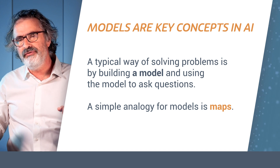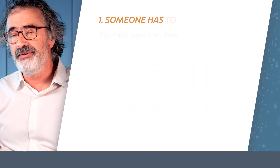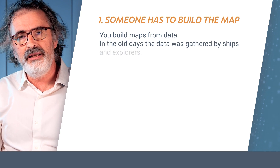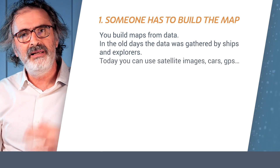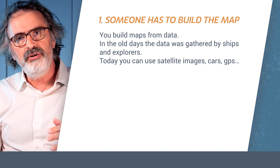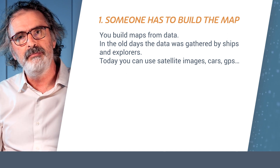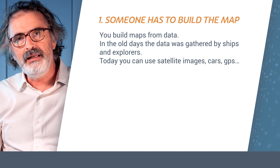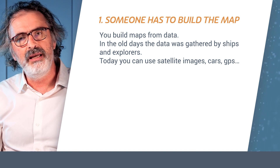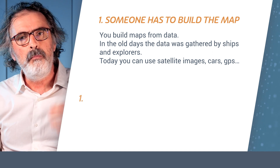A simple analogy for models is maps. When we consider maps, the first question is where do they come from? Historically, there has been a huge history of building maps. First, there were explorers going all over the world to bring back and build better and better maps. Then little by little, maps were built through images by balloons and then through satellites.